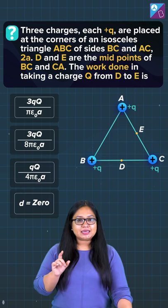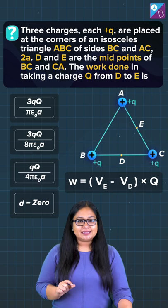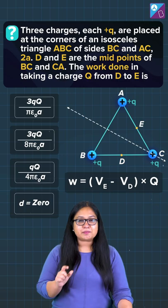Here, this is the line of symmetry. As we can see, point D and E are mirror images of each other. So the potential of D is equal to the potential of E, and the potential difference between D and E becomes zero.